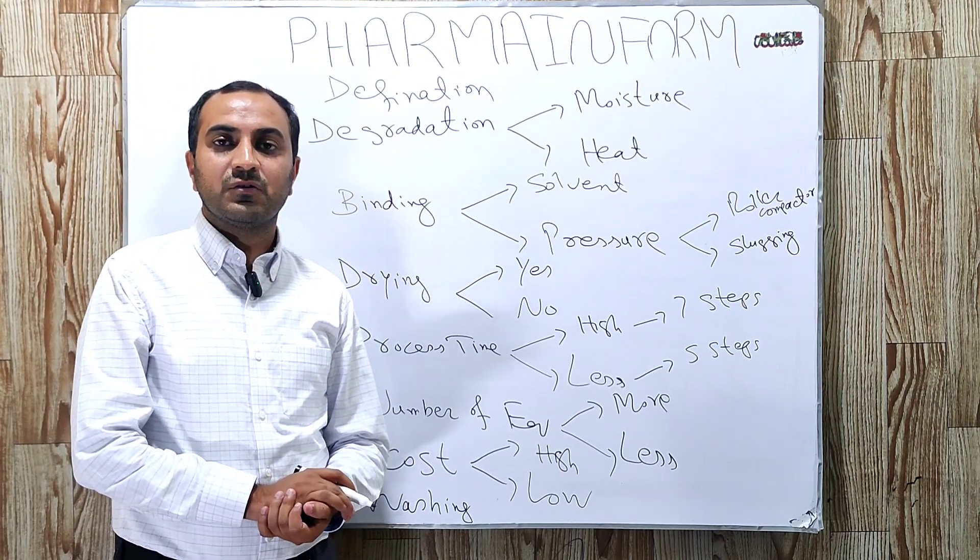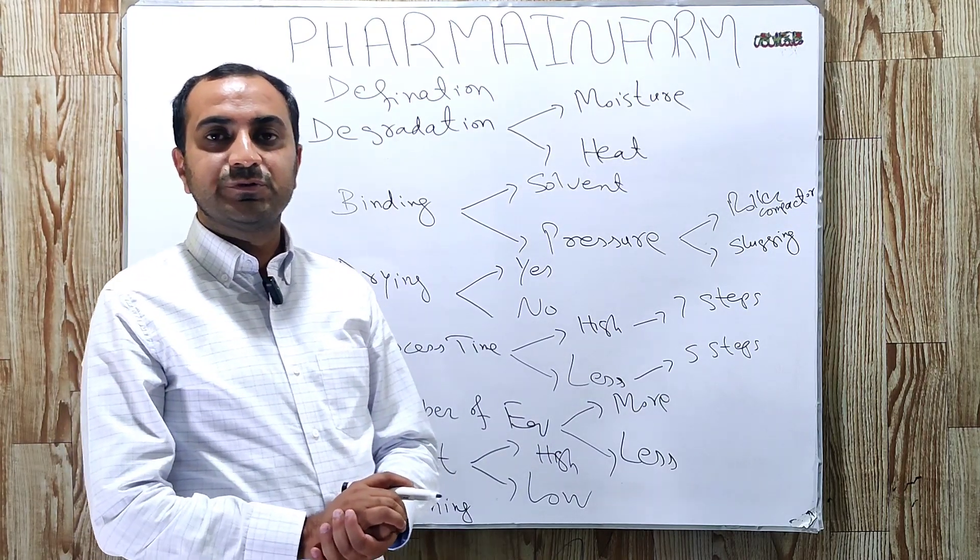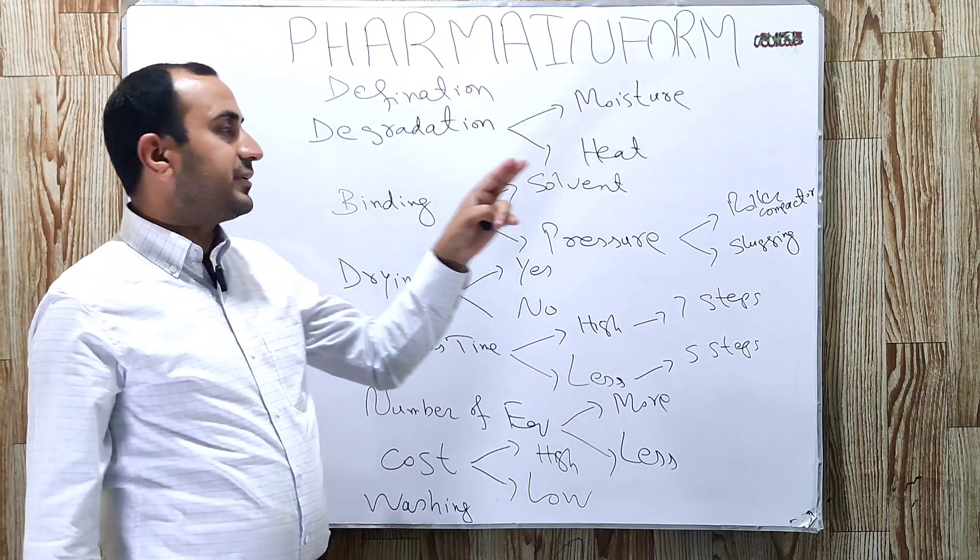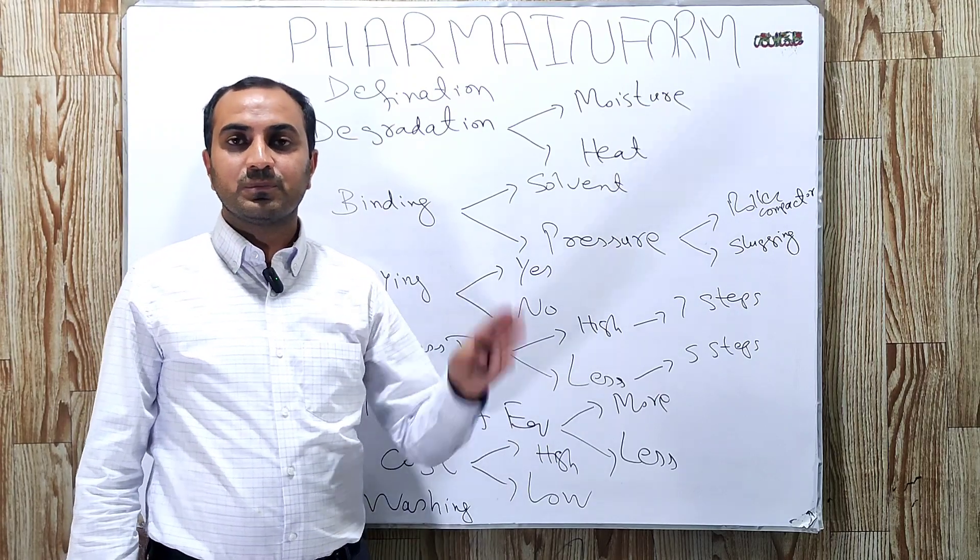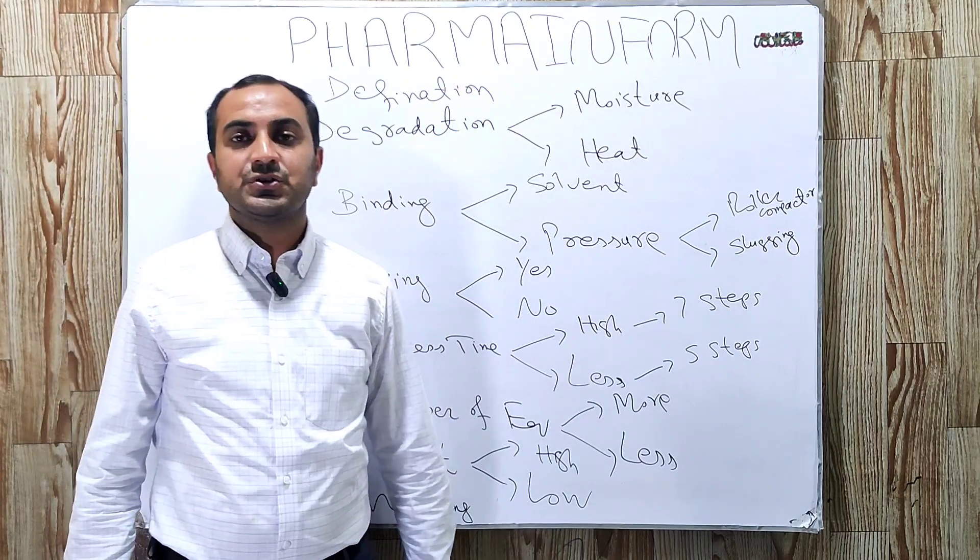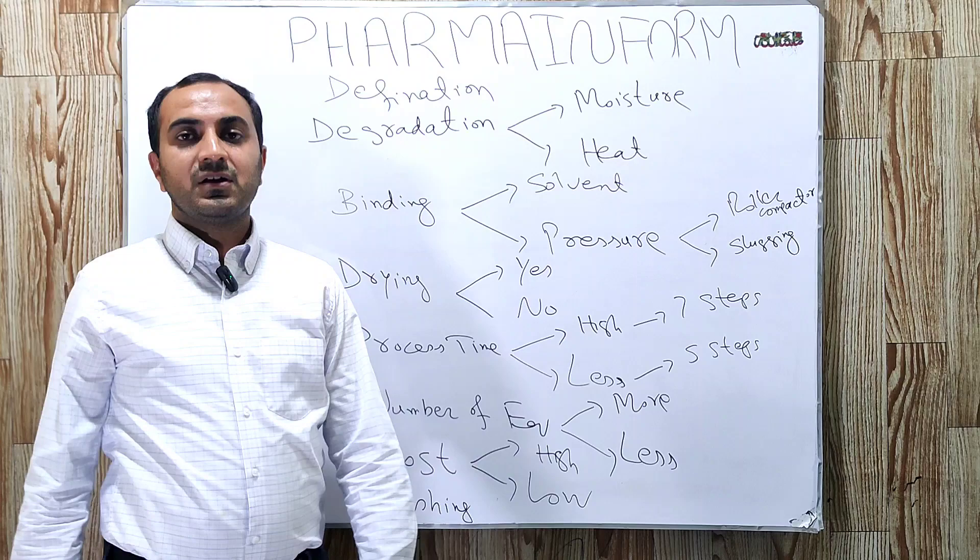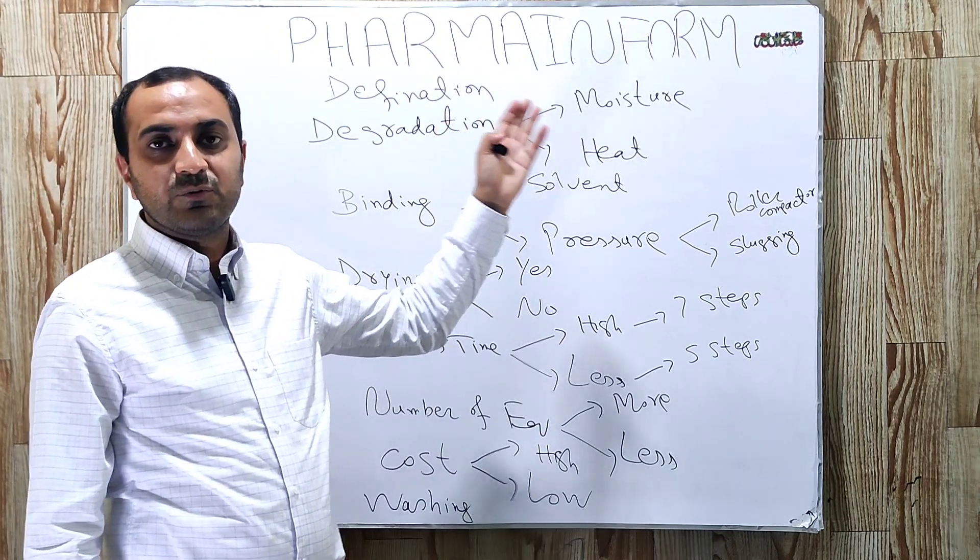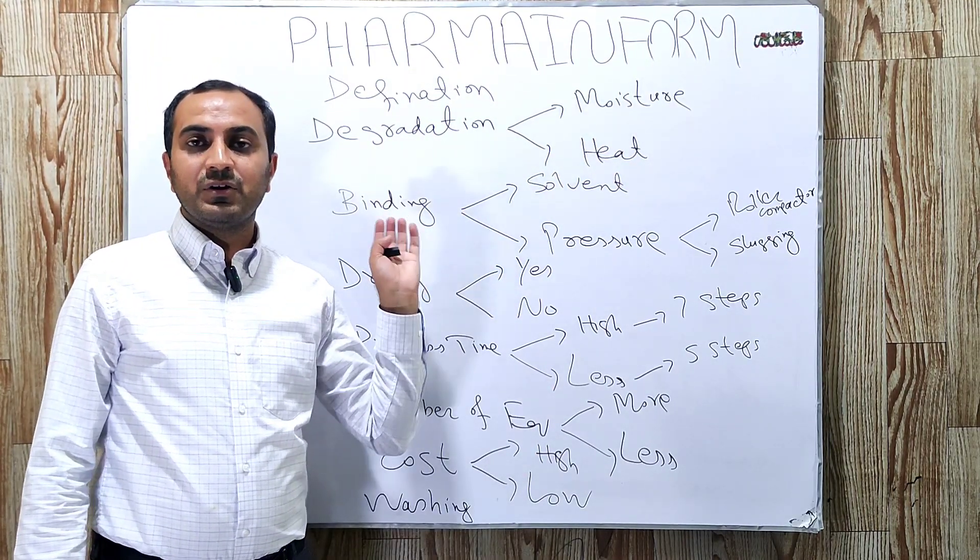So the main difference is: in wet granulation we use solvent or binder solution, and in dry granulation we use pressure. The next difference is product-specific. For which product do we use wet granulation and for which product do we use dry granulation?